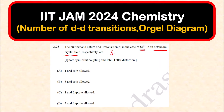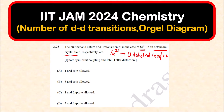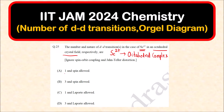So, scandium 2+ ion is in an octahedral complex. Four options are given: the first relates to the number of d-d transitions, and the second relates to whether the transition is spin allowed or Laporte allowed.